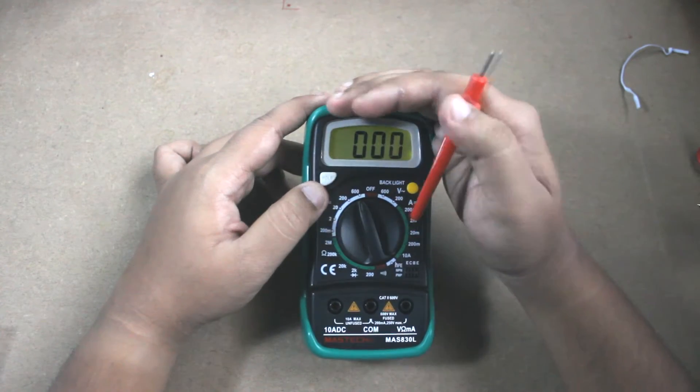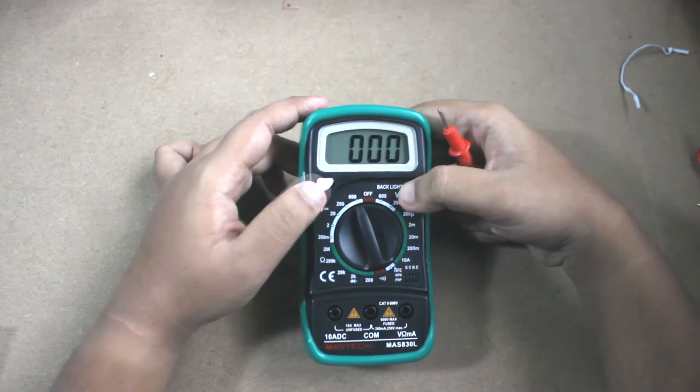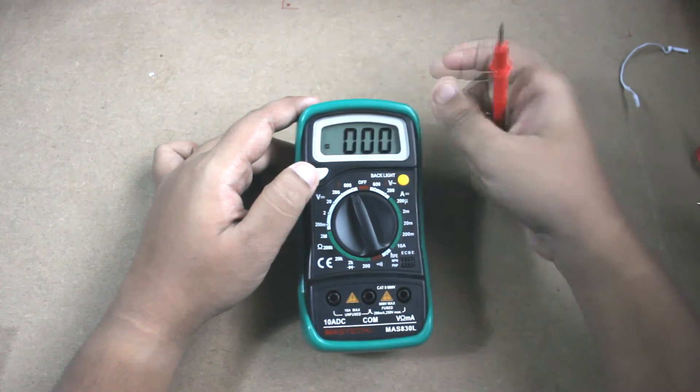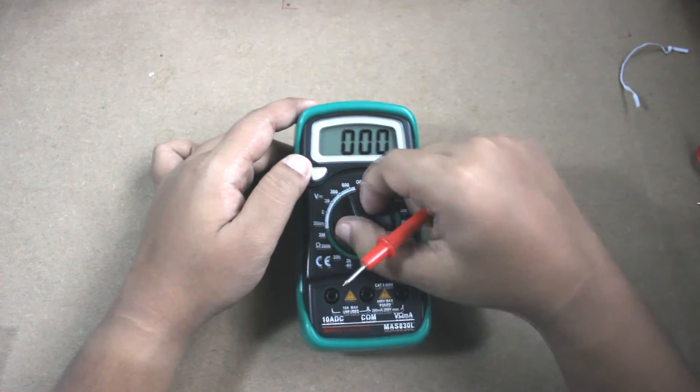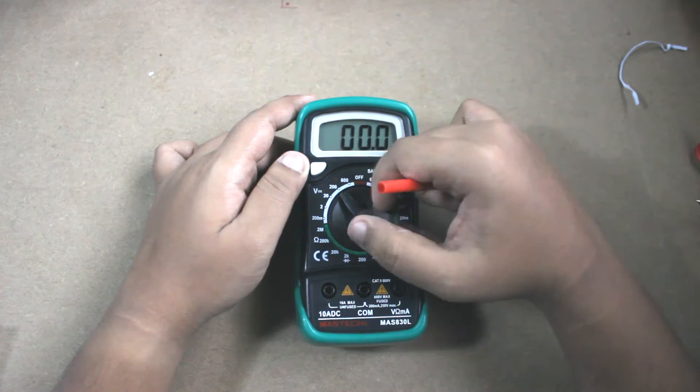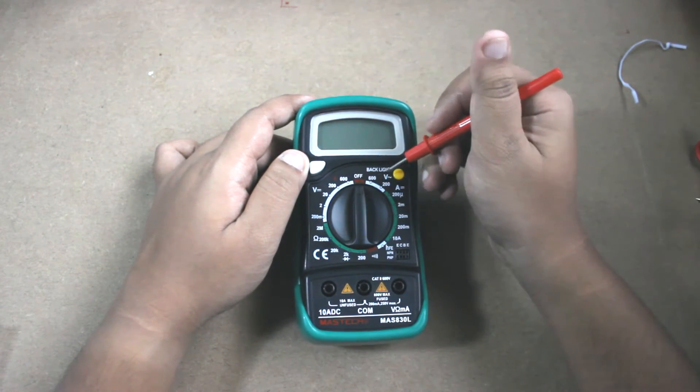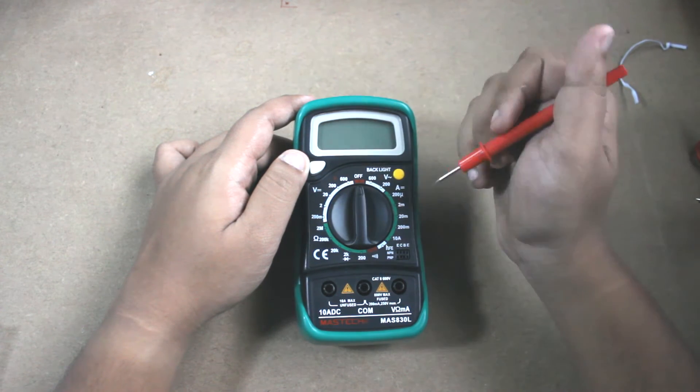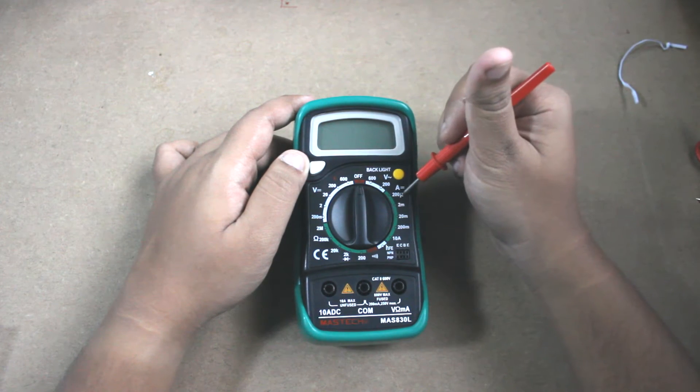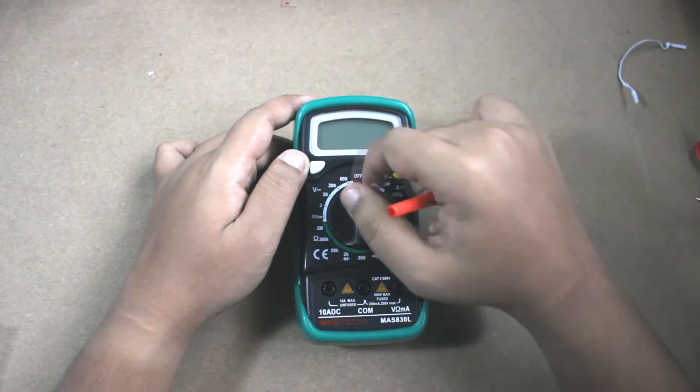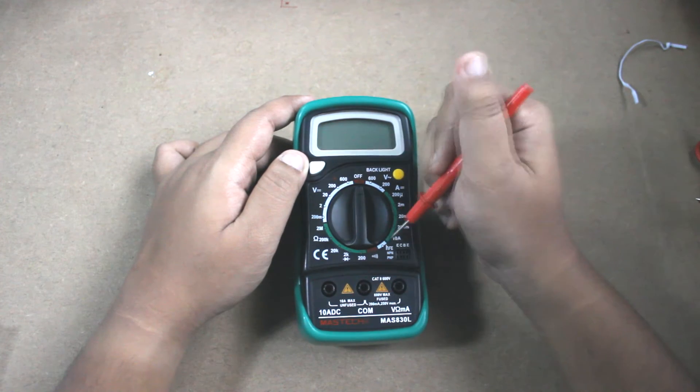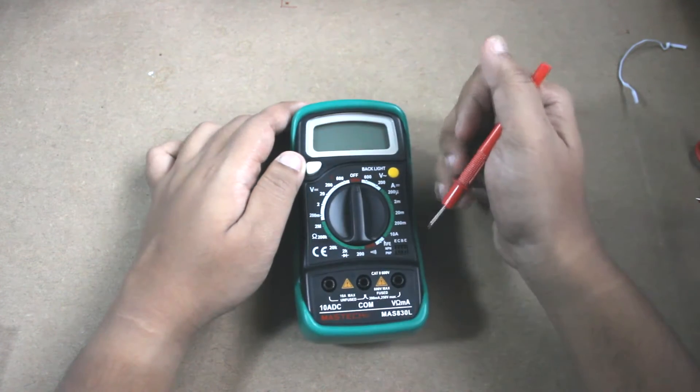As you can see, the backlight is green. This is the hold button. The V letter signifies that it can take voltage readings from 200 millivolts to 600 volts. This is the off position. In the opposite direction, it can take AC voltage from 200 to 600 volts. These are the current readings, 200 microamperes to 10 amperes. These are the ohm meter settings from 200 ohms to 2 megaohms. This is the continuity tester, this is for transistor checking.